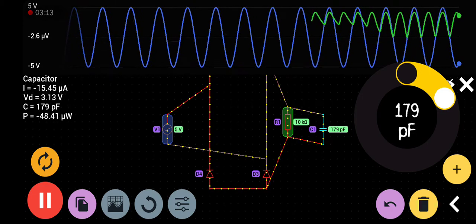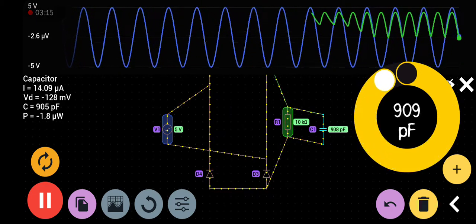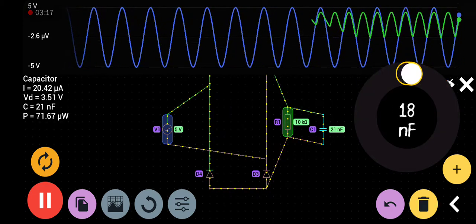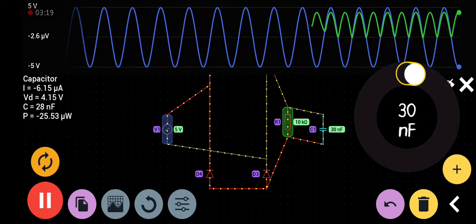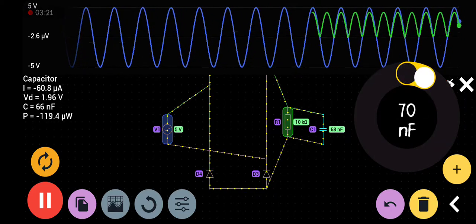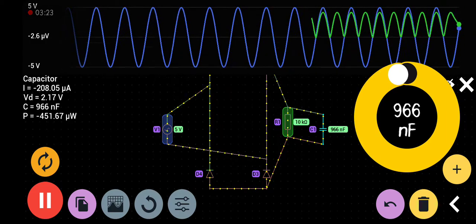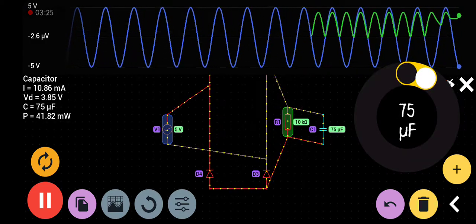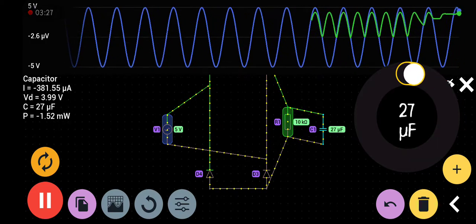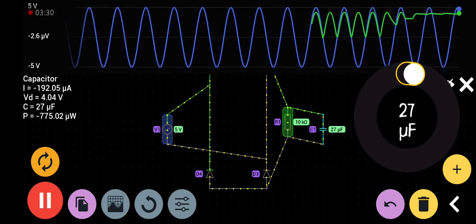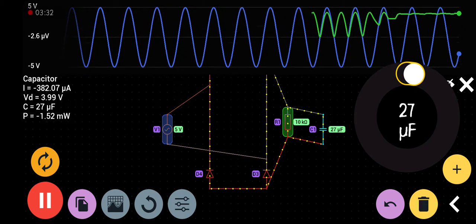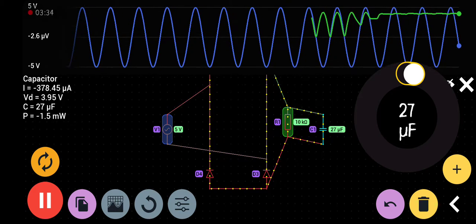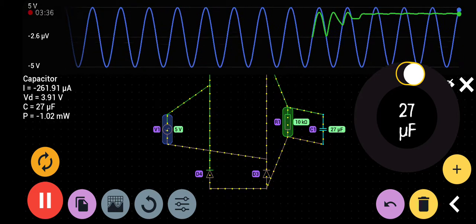Now if we increase the capacitance from 1 microfarad to let's say 27 microfarad, you can see almost DC voltage is flowing.